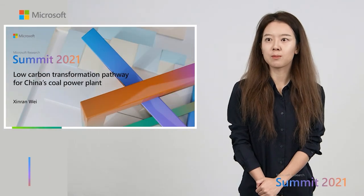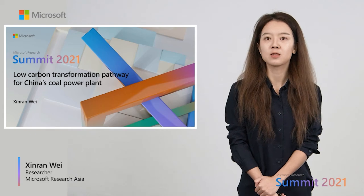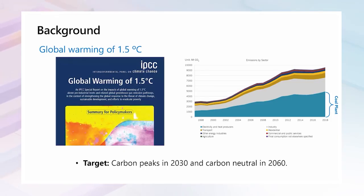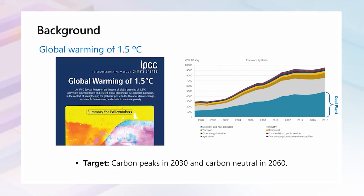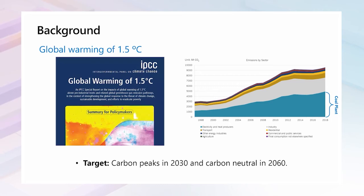Hello everyone. I'm Xin Renwei, a researcher from Microsoft Research Asia. Today I will introduce our recent work on low-carbon transformation pathways for China's coal power plants. Climate change has become one of the most crucial global challenges. Many countries have set goals toward carbon neutrality. China has pledged that its carbon emissions should peak by 2030 and decline to reach carbon neutrality by 2060. To achieve this, it is necessary to vigorously transform coal power plants since they produce more than 40% of China's total carbon emissions.